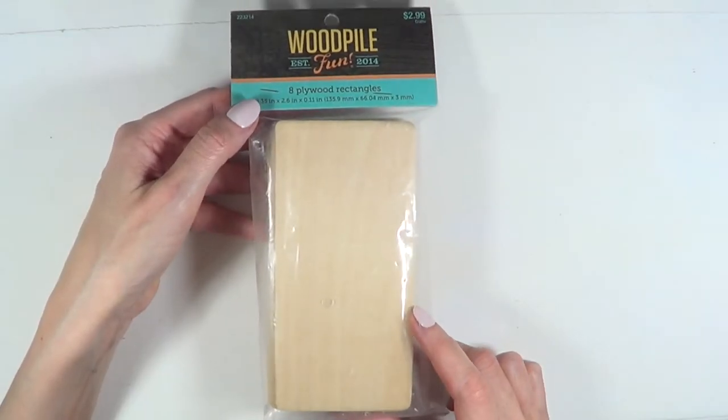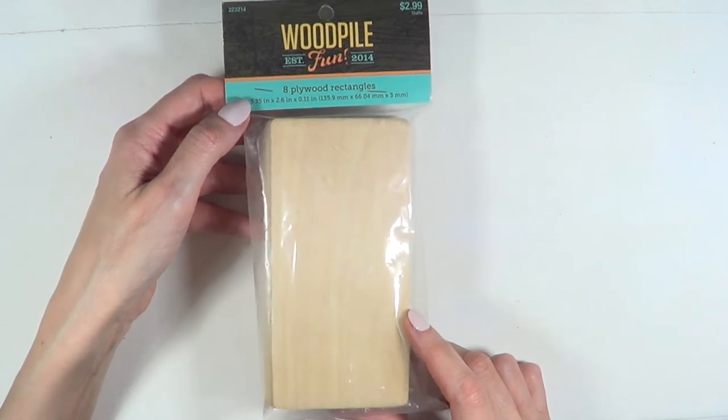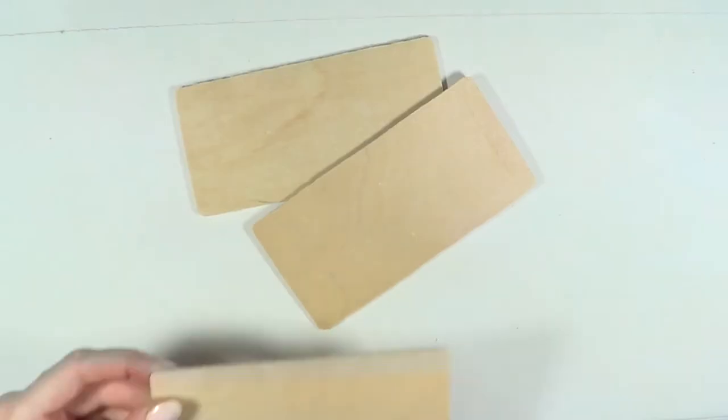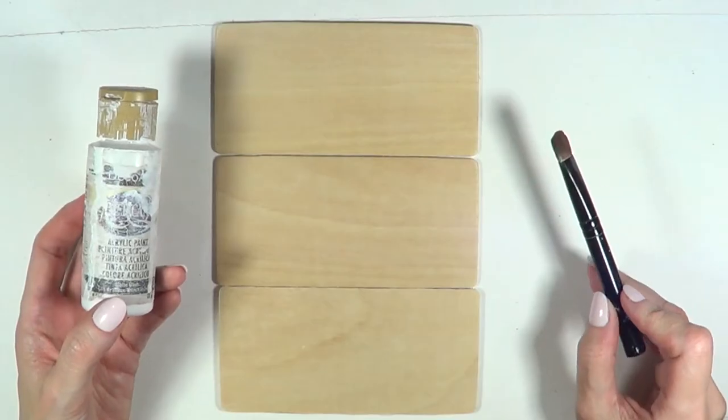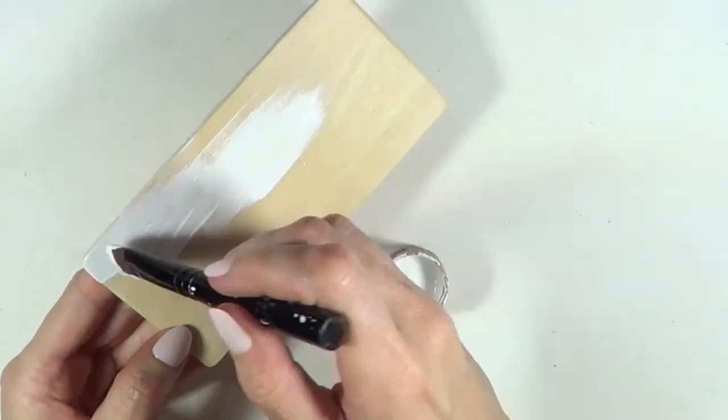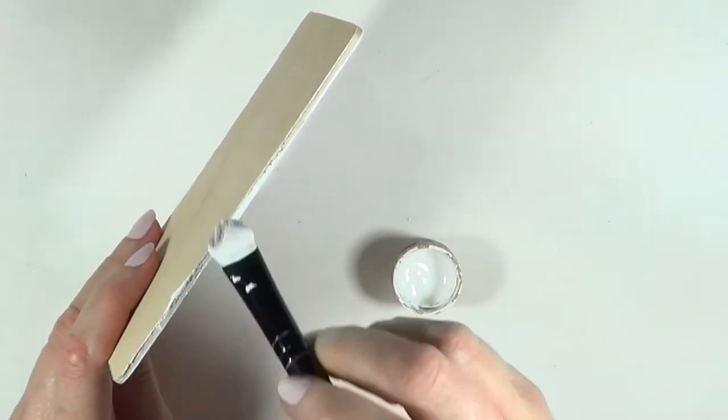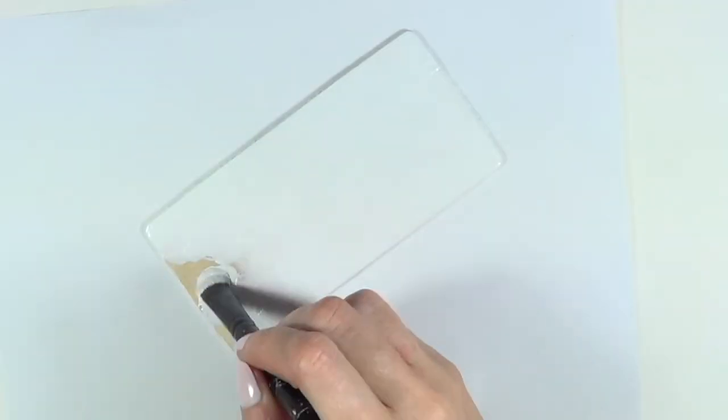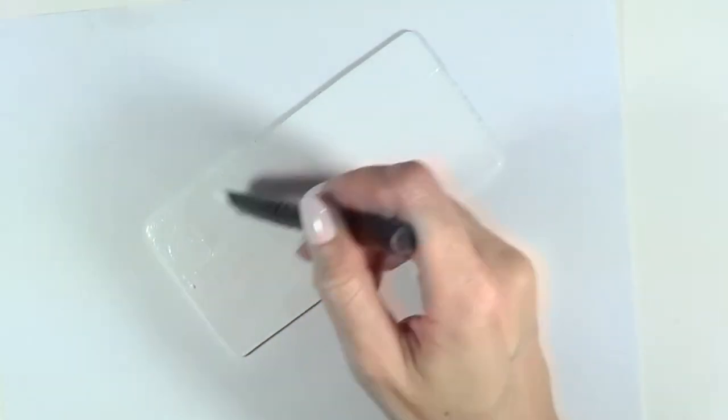For this, I'm going to be using three of these wood rectangles. I bought them at Hobby Lobby. I'm going to be painting them with this white acrylic paint and this brush. I'm just going to be covering the front part of it, not worrying about the back part.